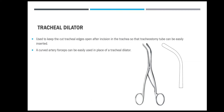Tracheal dilator is used to keep the cut tracheal edges open after incision in the trachea so the tracheostomy tube can be easily inserted. A curved artery forceps can be easily placed in place of a tracheal dilator. This is the picture showing tracheal dilator.